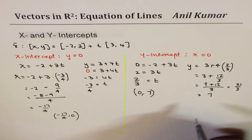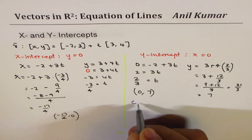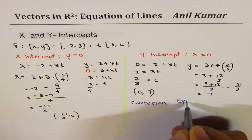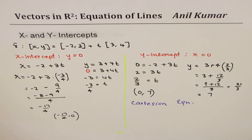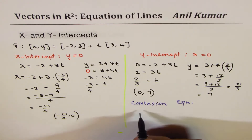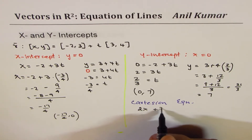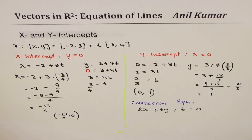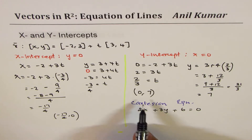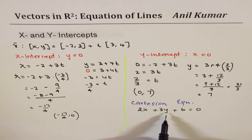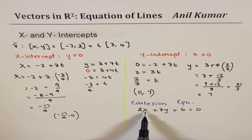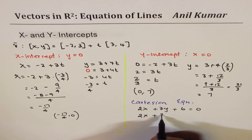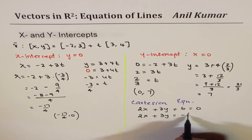The other example could be a Cartesian equation. Let us say the Cartesian equation is 2x plus 3y plus 6 equals to 0. Finding x and y-intercepts here is very simple. Just equate x equals to 0 or y equals to 0. We can rearrange this as 2x plus 3y equals to minus 6.